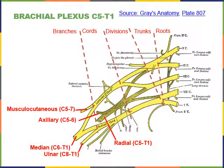The axillary nerve is a smaller branch off the posterior cord arising from the ventral rami of C5 and C6. As its name suggests, it travels into the axillary region to excite the deltoids and teres minor.